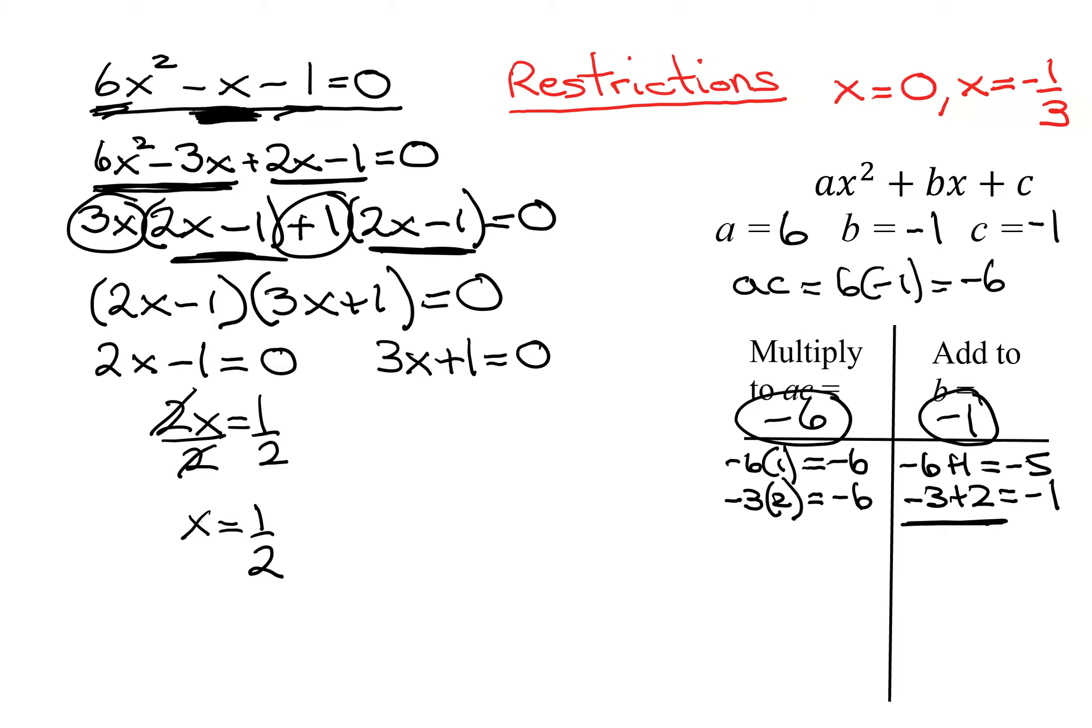And subtract 1 from both sides here. I get 3x equals negative 1. Divide both sides by 3. I get x equals negative 1 third. Are these both good solutions?